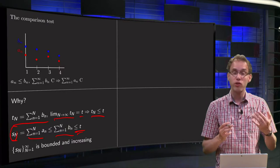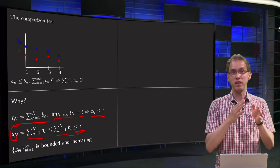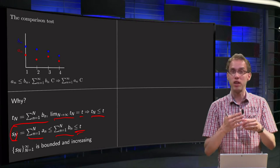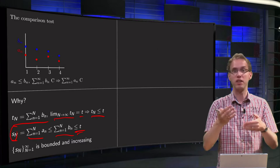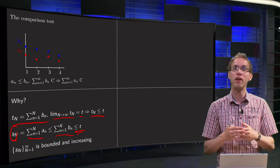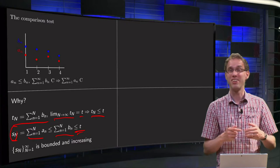Furthermore, we know that all terms, all An are positive, so the S1 is A1, the S2 is A1 plus A2, so the S2 is bigger than the S1 and S3 is bigger than the S2 and so on. So we know that the partial sums, the sequence of the partial sums, is also increasing.